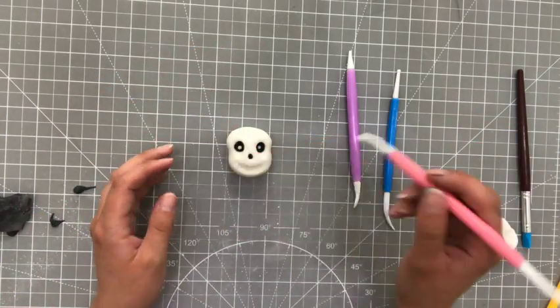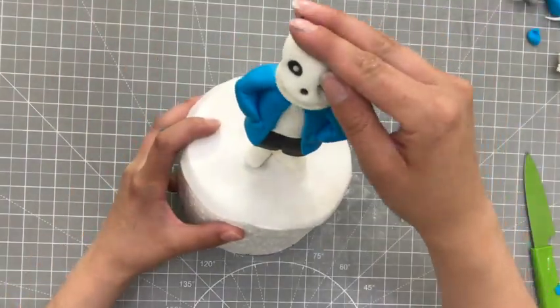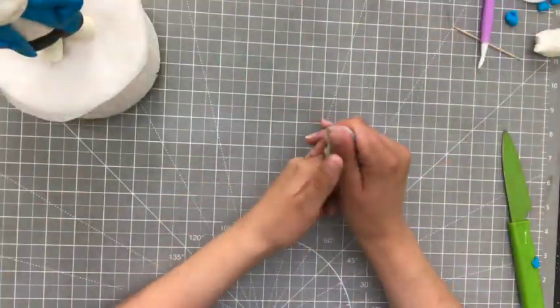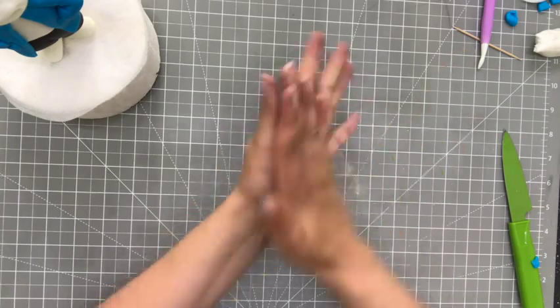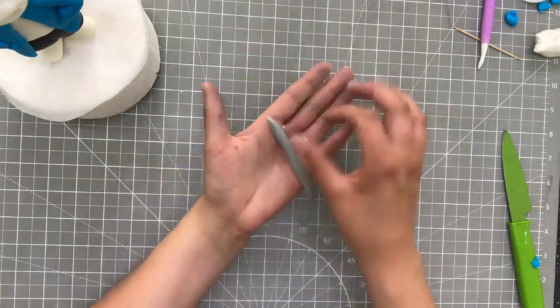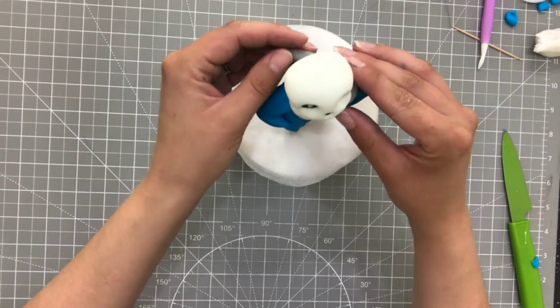He has a grey collar on his jacket. Or is it a collar or a hood? I don't know. Anyway, I rolled out a cord of grey and keep it thinner at both ends. And then once it's stuck in place, I roll my sculpting tool along it to create a fold.